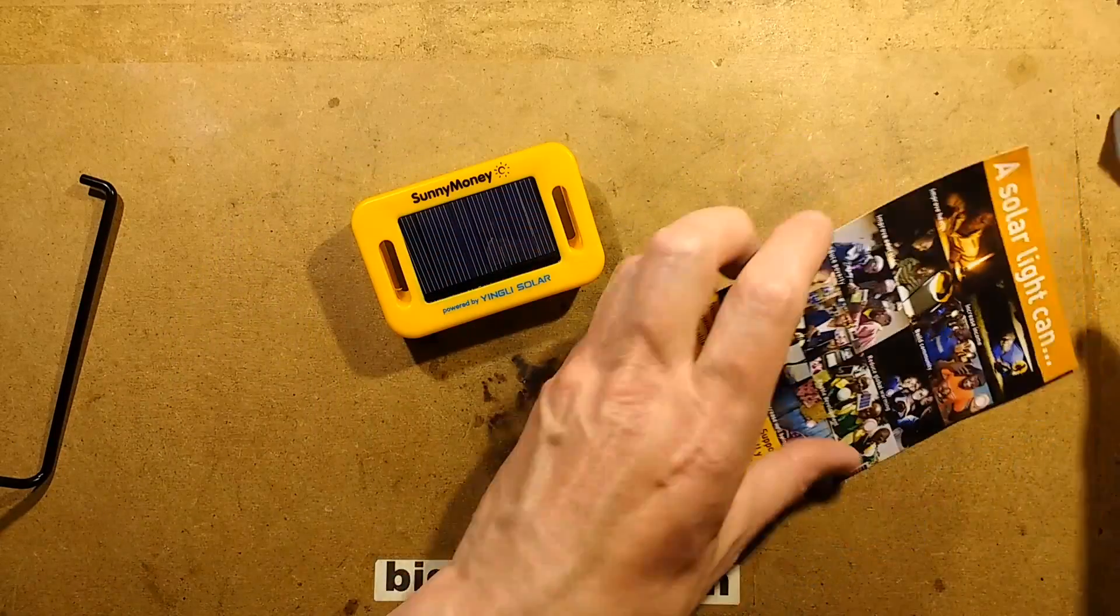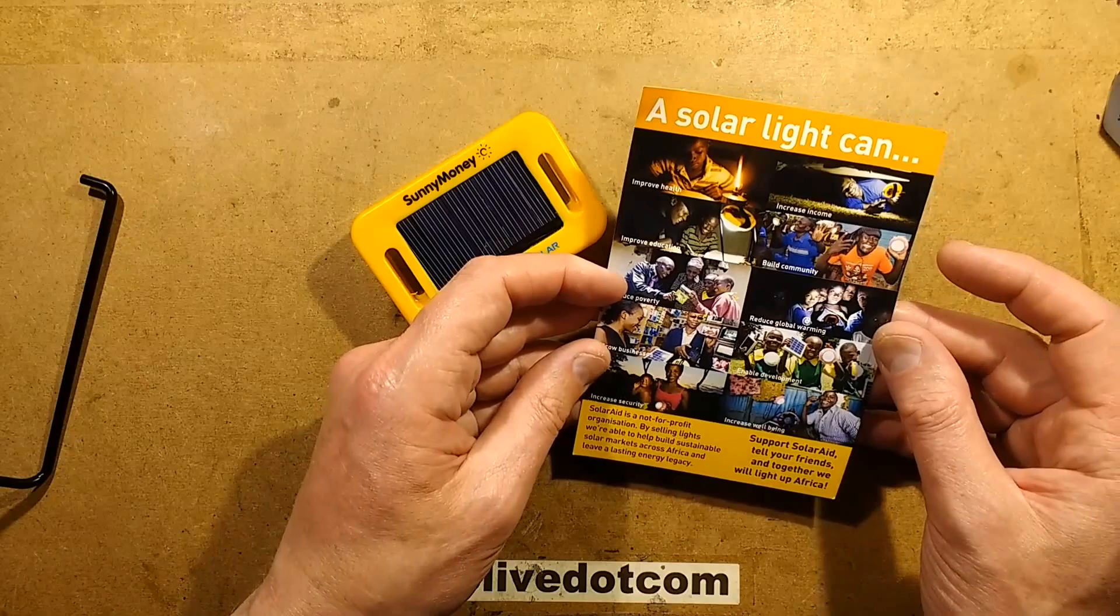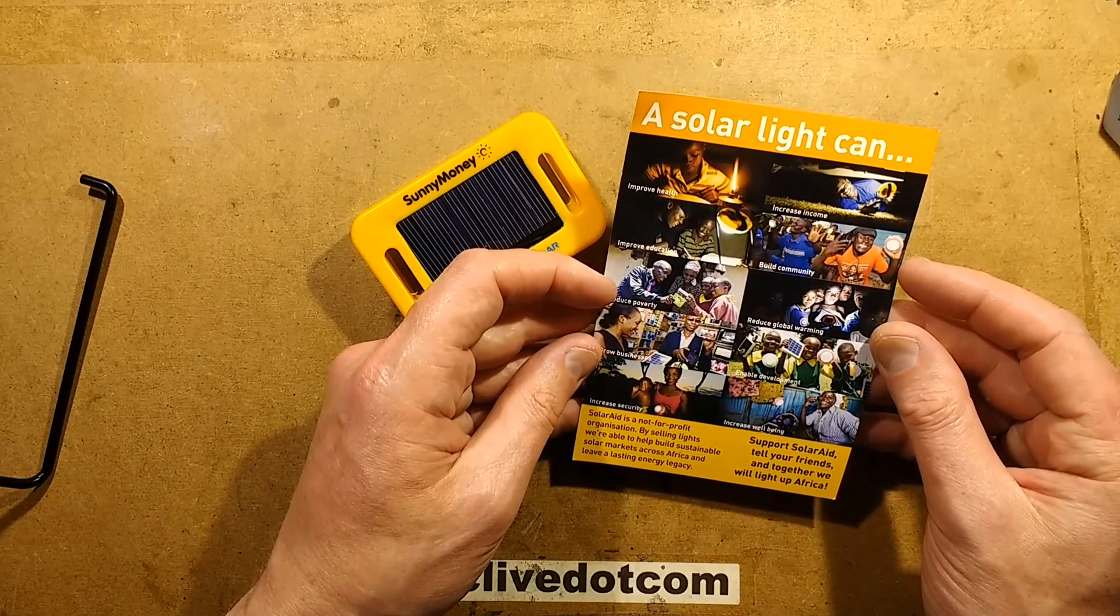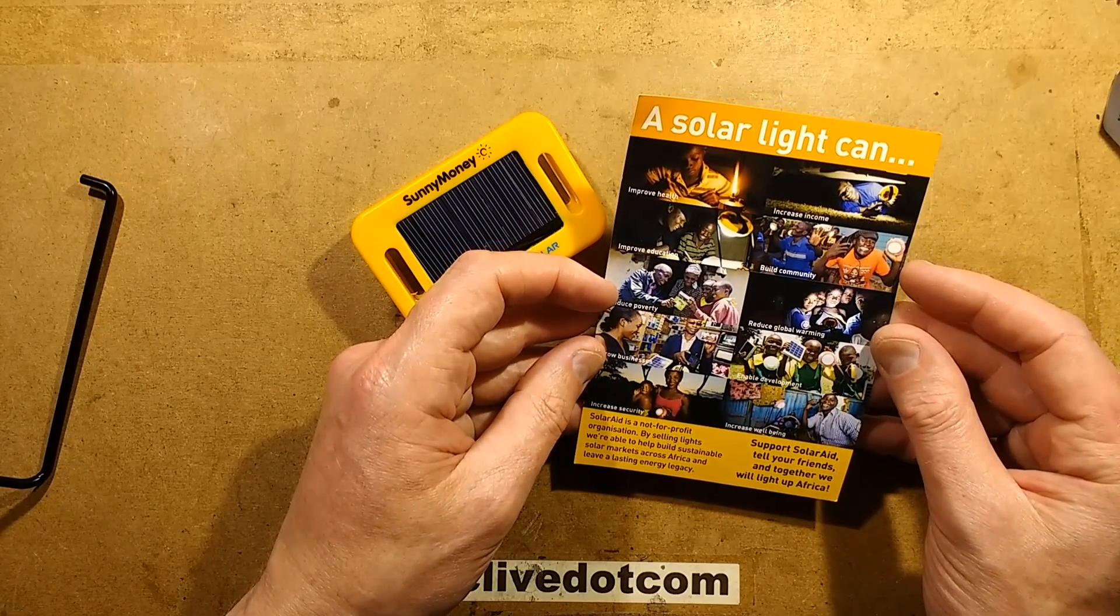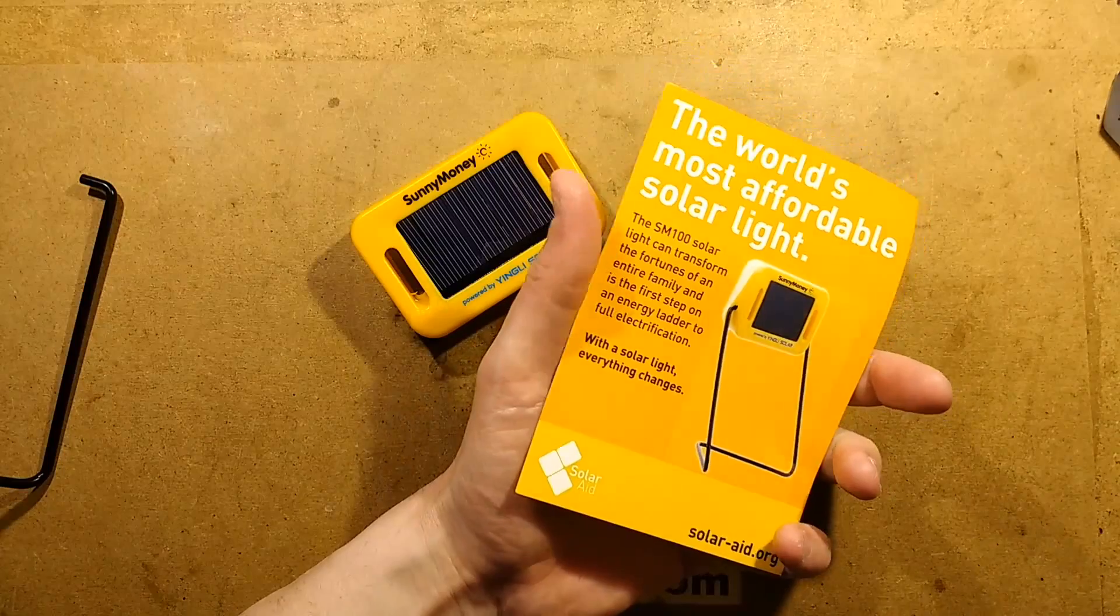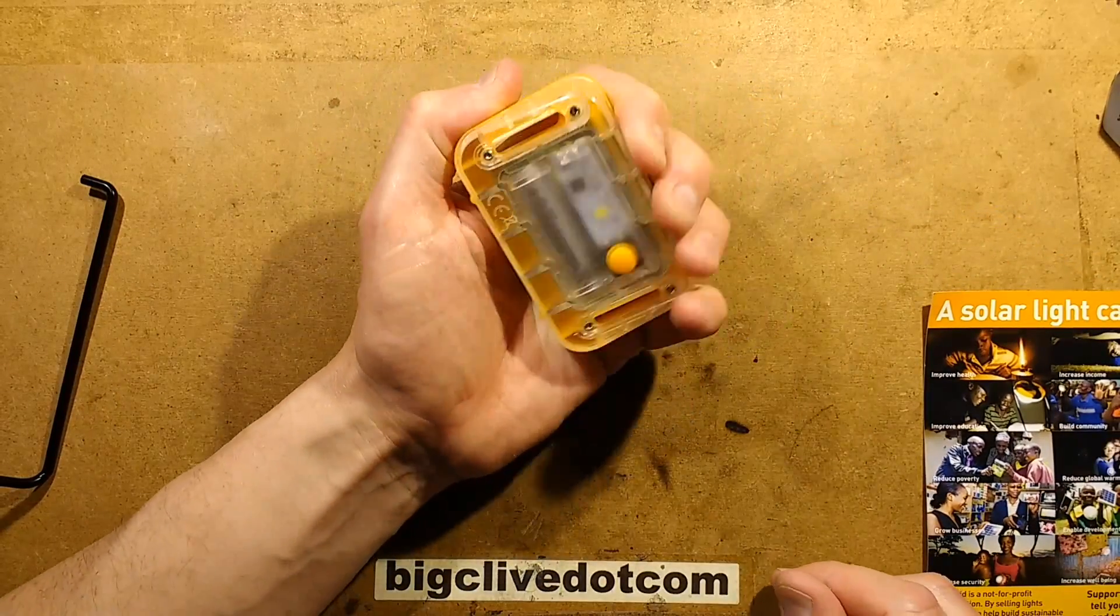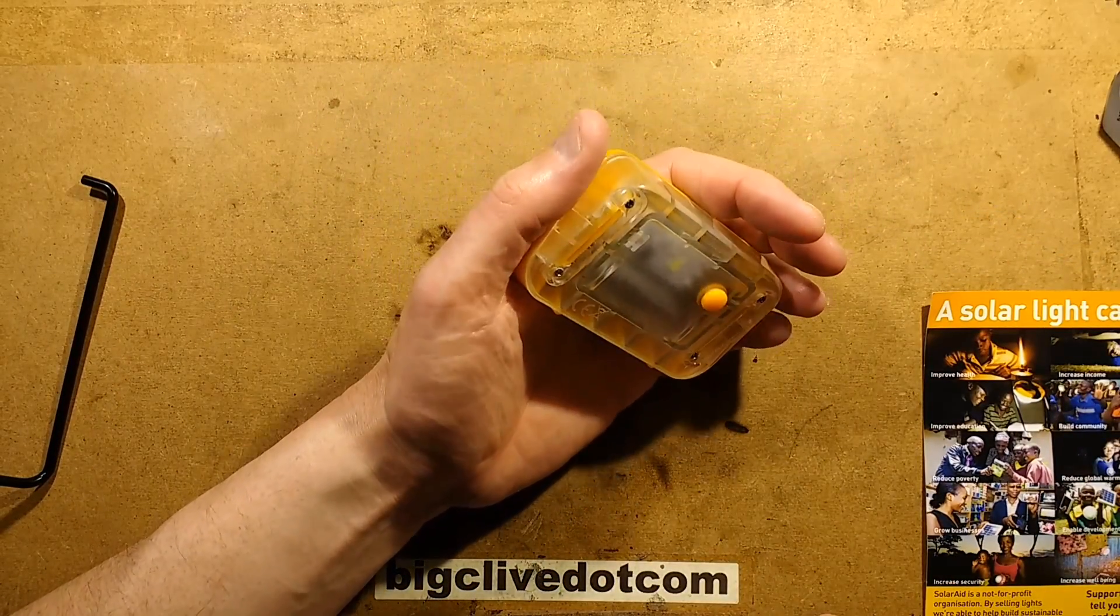It's got pictures of lots of worthy African kids with their solar lights. I have to say it would be a great toy for a kid to have a solar light like this. So let's take a look inside it.